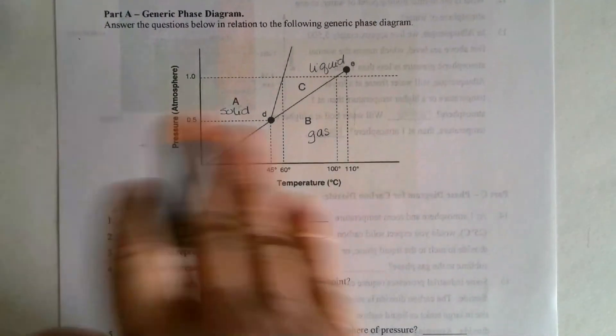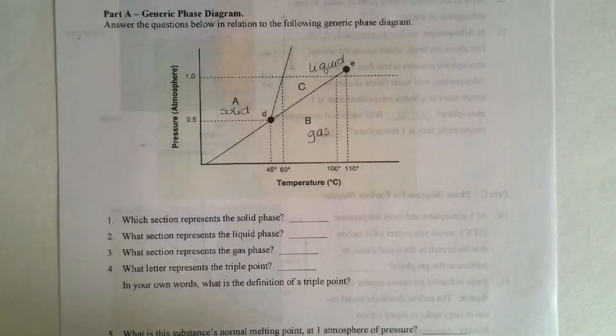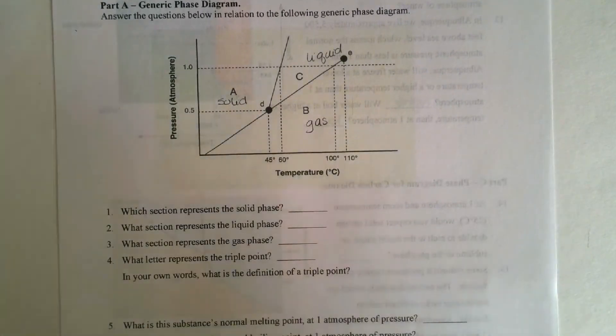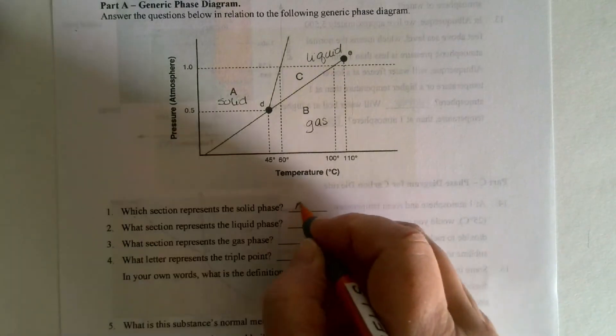Now, I see this is a phase diagram. So I did all that information. And you know what I'm looking at here? The first question is very easy then for me to answer. It says, what section represents a solid phase? And you would write A.